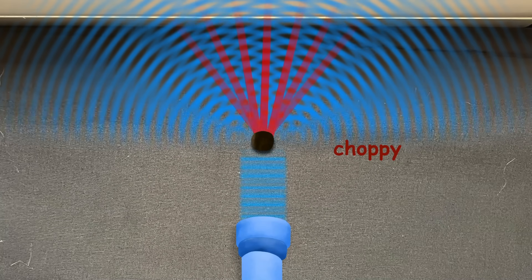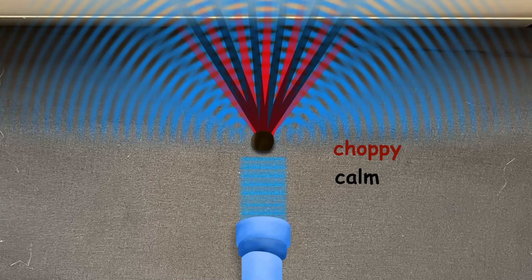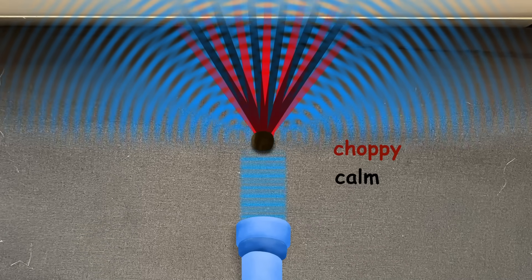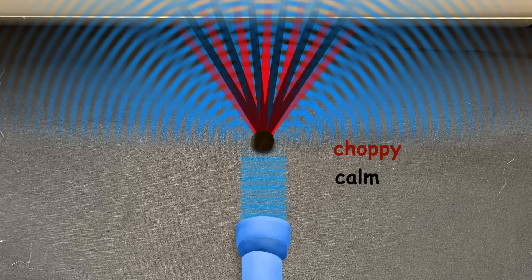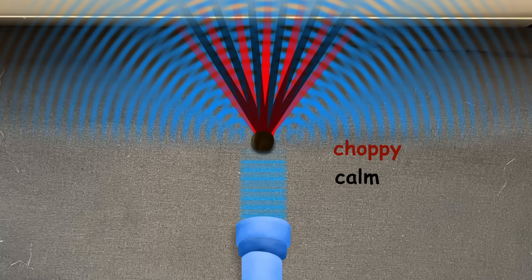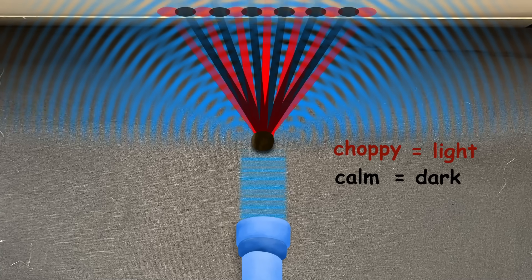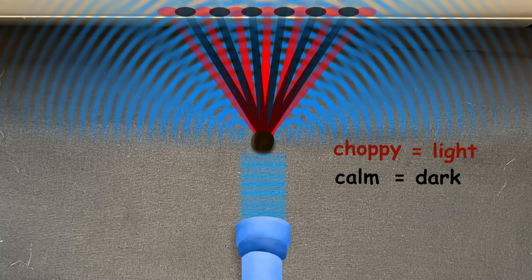There are these choppy and calm spots all over and if you map them out then you get these lines. What's this got to do with the double slit experiment? Well look at the waves across the wall. You have these alternating parts of choppiness and calmness. That lines up suspiciously well with the pattern of the double slit where you have alternating spots of light and dark.